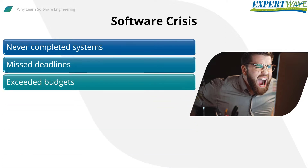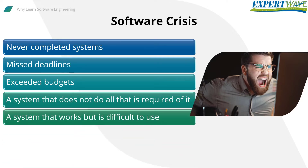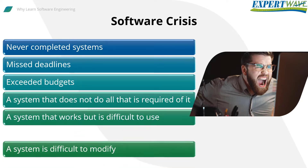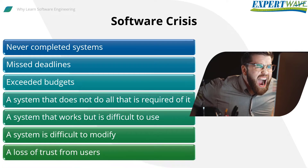Symptoms of the software crisis include: never-completed systems, missed deadlines, exceeded budgets, systems that do not do all that is required of them, systems that work but are difficult to use, systems that are difficult to modify to meet changes in organizational needs and practices, and a loss of trust from users who may experience many problems with the software.